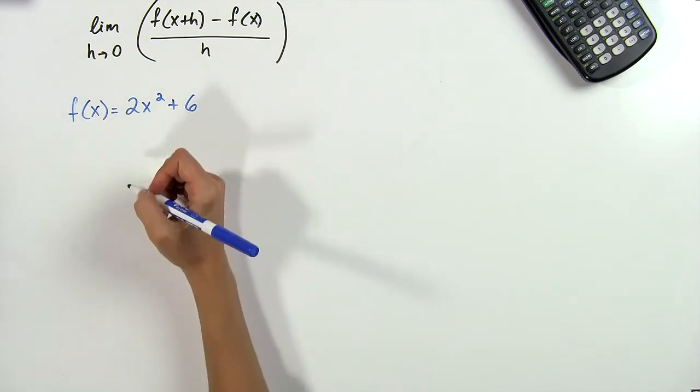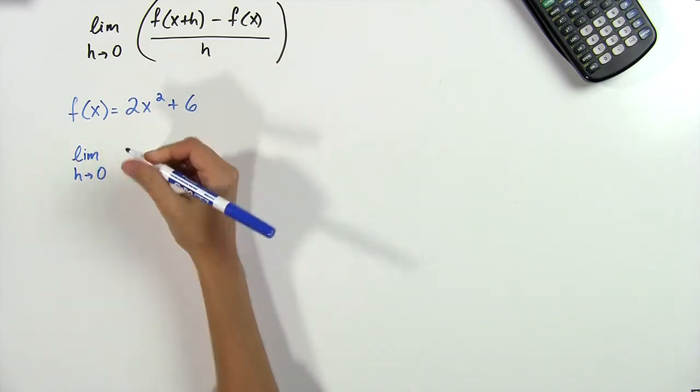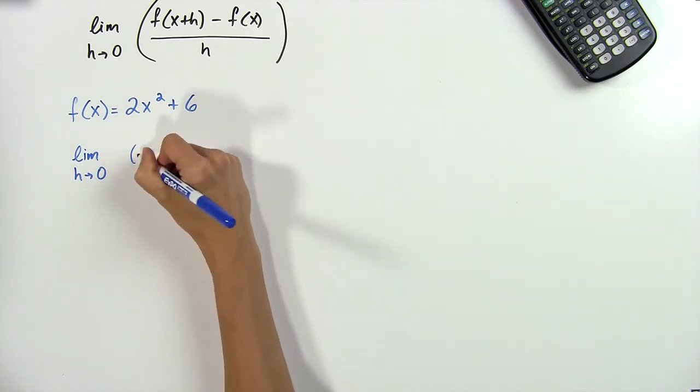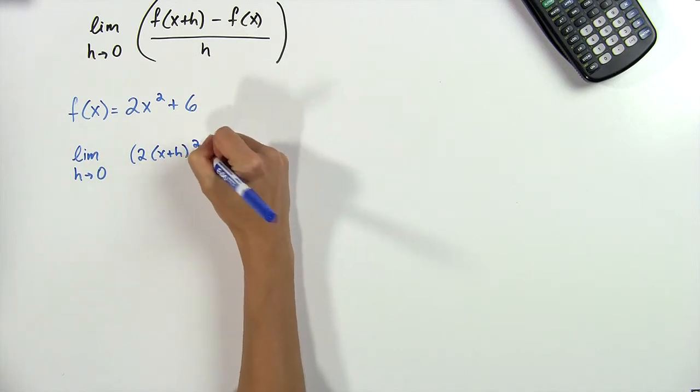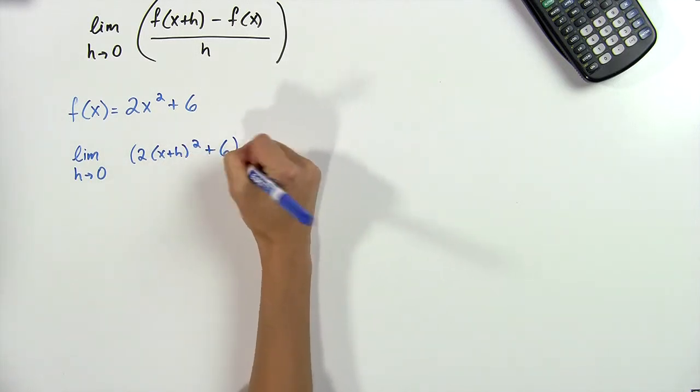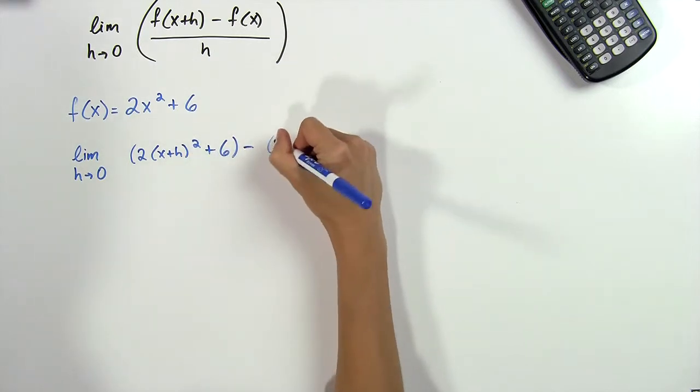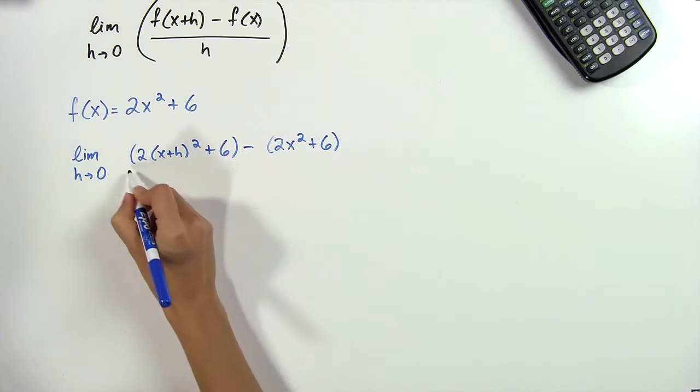We begin by writing our limit definition again and filling in the functions as we go. So we have the limit as h tends to 0 of f(x+h), so here we'll have 2(x+h) squared plus 6, minus f(x), so this is just 2x squared plus 6, all divided by h.